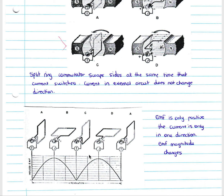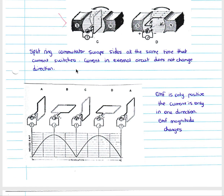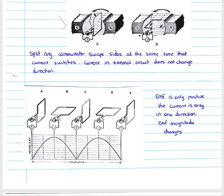Your direct current generator has no alternating current and therefore current is always in the same direction, due to your split-ring commutator. You must know how to explain the use of the split-ring commutator and how it works, and be able to explain that every 180 degrees it changes the connection with the coil and therefore keeps the direction of current flow the same throughout.